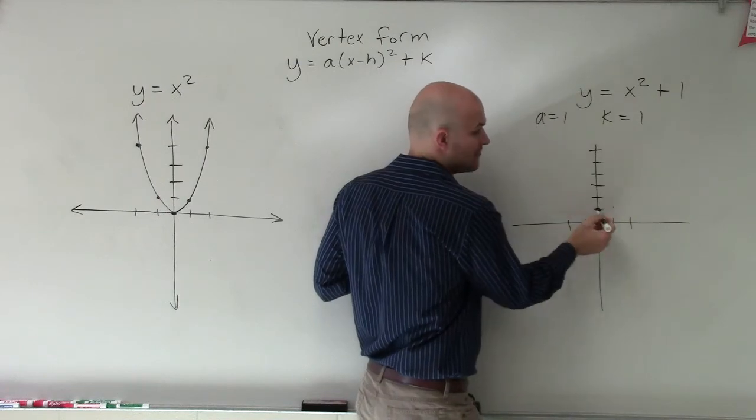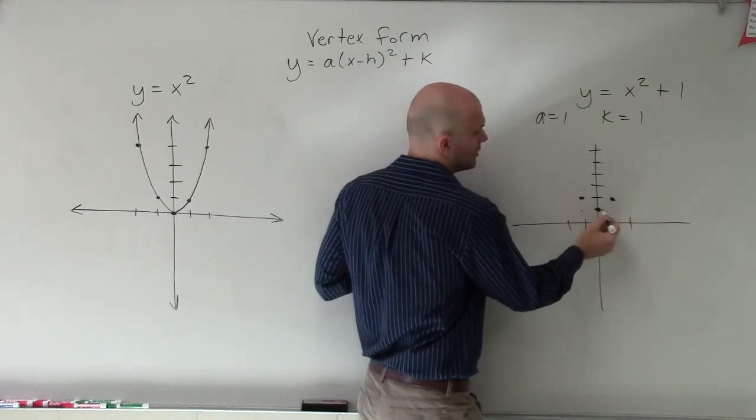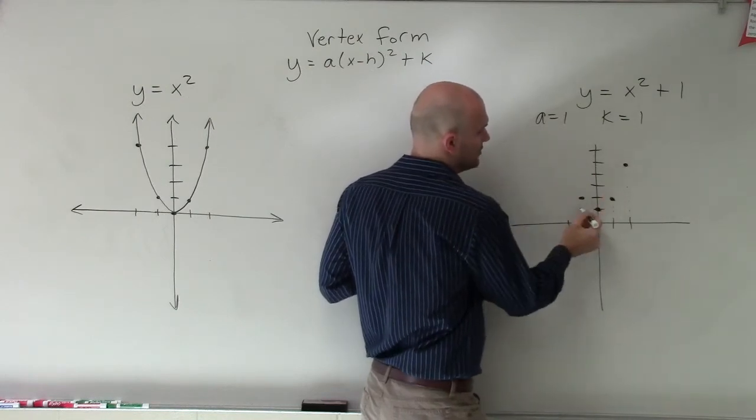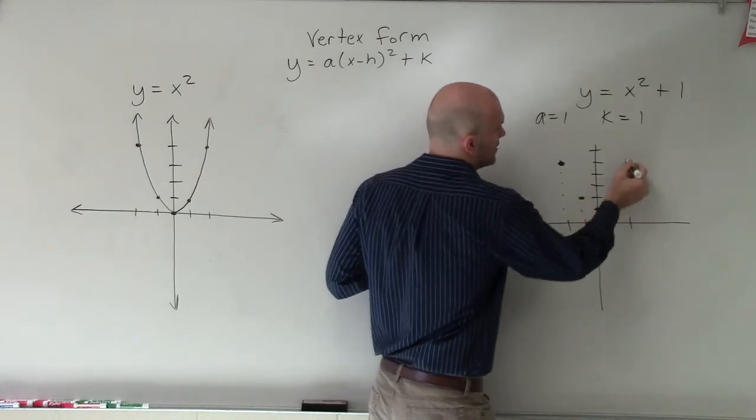So I go over 1. So from my vertex, I go over 1, up 1. Over 1, up 1. Over 2, up 4. And this only occurs when your a value is 1.